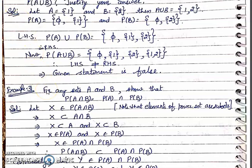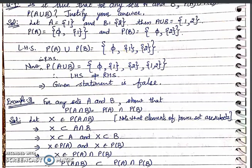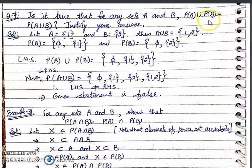Continuing with this — in the question, we proved that the power set of A union B, that is P(A)∪P(B), is not equal to P(A∪B).